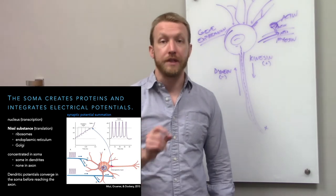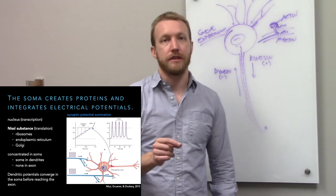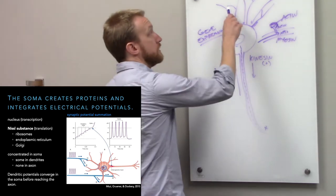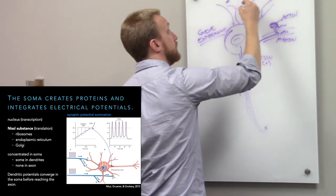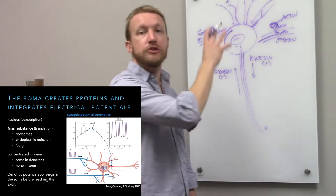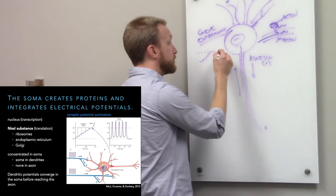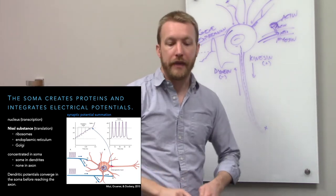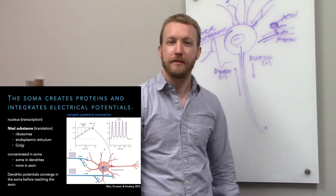A single synapse in the central nervous system is weak — one synapse will not get the job done. The CNS is very democratic, so we need a lot of input synchronously on our dendrites. We need depolarization at many synapses. As that depolarization moves into the cell body, it weakens a bit, which is why we need so much excitatory input at the same time to depolarize to threshold and fire an action potential. We'll talk more about that in lectures 3 and 4.